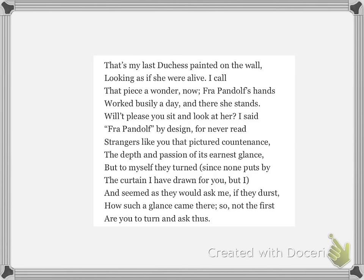Let's have a closer look at the first 13 lines of the poem, and we can quite quickly begin to gain an insight into the character of the duke. He repeats the name of the artist who painted the picture several times — 'Fra Pandolf's hands,' 'I said Fra Pandolf by design' — as if he's proud and showing off, almost like name-dropping about having this great artist's work in his house. He also draws the envoy's attention to the quality of the artwork in being able to reproduce 'the depth and passion of its earnest glance,' even commenting that it's such a good painting that it looks as if she was still alive.